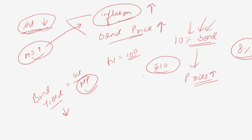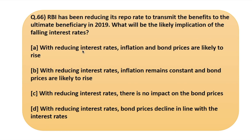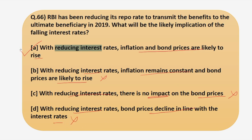To summarize: with a decrease in interest rates, inflation will go up, bond price will go up, and bond yield will go down. Coming back to the question — with reducing interest rates, inflation and bond prices are likely to rise, so the answer is option A. The other options stating inflation remains constant, or no impact on bond prices, or bond prices decline in line with interest rates, are all incorrect. The correct answer is option A.